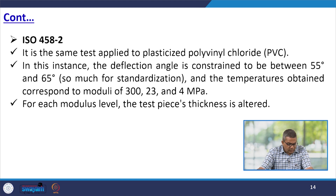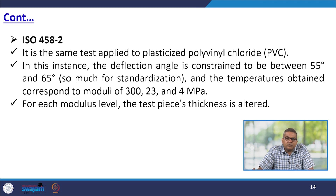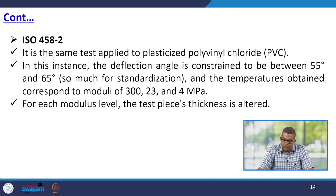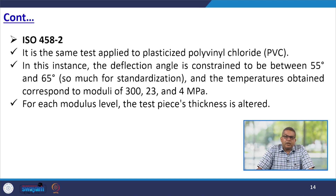ISO 4582 is the same test applied to plasticised polyvinyl chloride (PVC). In this particular instance, the deflection angle is constrained to between 55 degrees and 65 degrees, providing further standardisation. The temperatures obtained correspond to moduli of 323 and 4 megapascal. For each modulus level, the test piece thickness is altered.